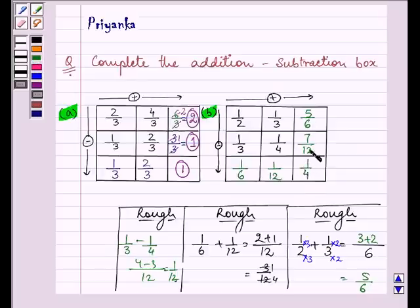And if you will be subtracting 5 by 6 and 7 by 12, you will again get 1 by 4. And that says that your addition and subtraction was correct. So this completes your session.